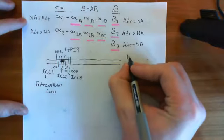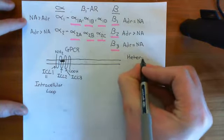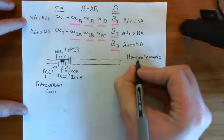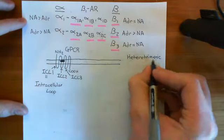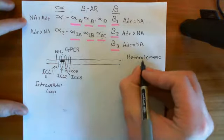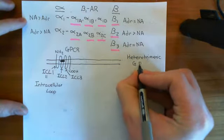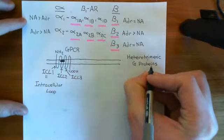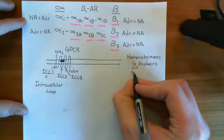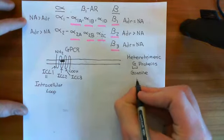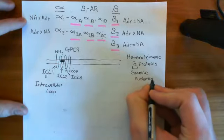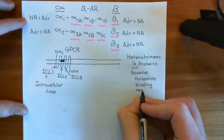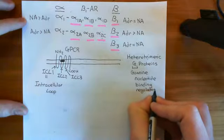Heterotrimeric G proteins are trimers — they consist of three separate proteins, and all of the proteins are different; that's what the 'hetero' means. G protein stands for guanine nucleotide binding regulatory protein. They are the guanine nucleotide binding regulatory proteins.